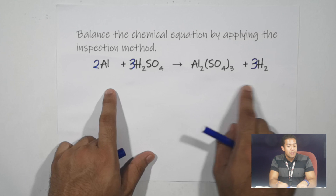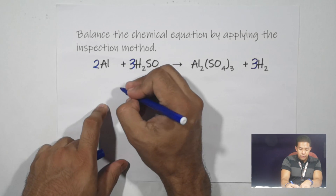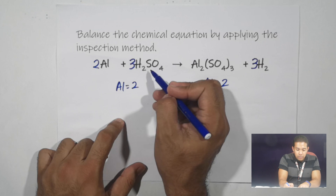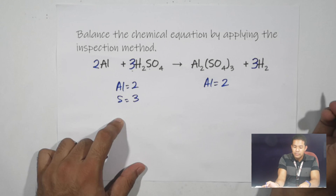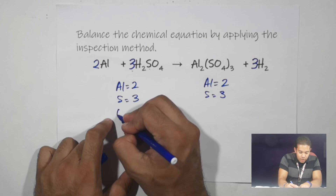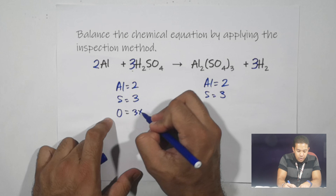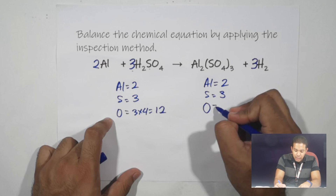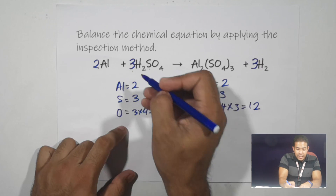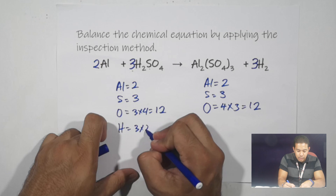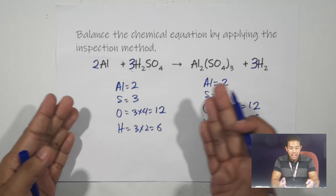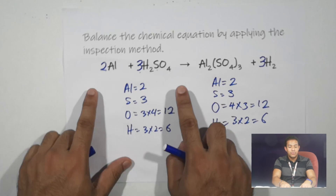Let's verify all elements are balanced. Aluminium: two on the reactant, two on the product — balanced. Sulphur: three on the reactant, three on the product — balanced. Oxygen: three times four equals 12 on the reactant; four times three equals 12 on the product — balanced. Hydrogen: three times two equals six on the reactant; three times two equals six on the product — balanced. The elements on the reactant and product are identical, so this equation is balanced.